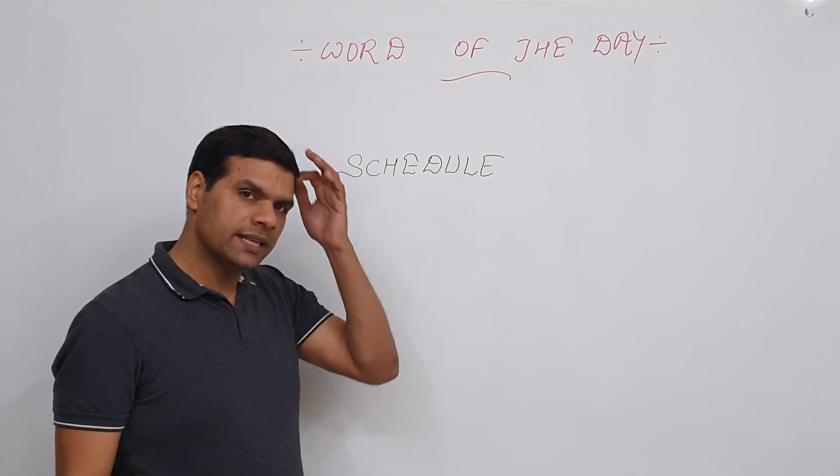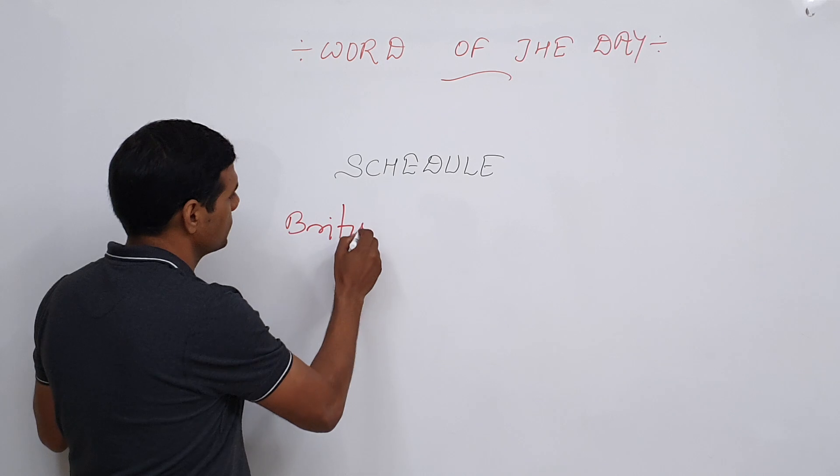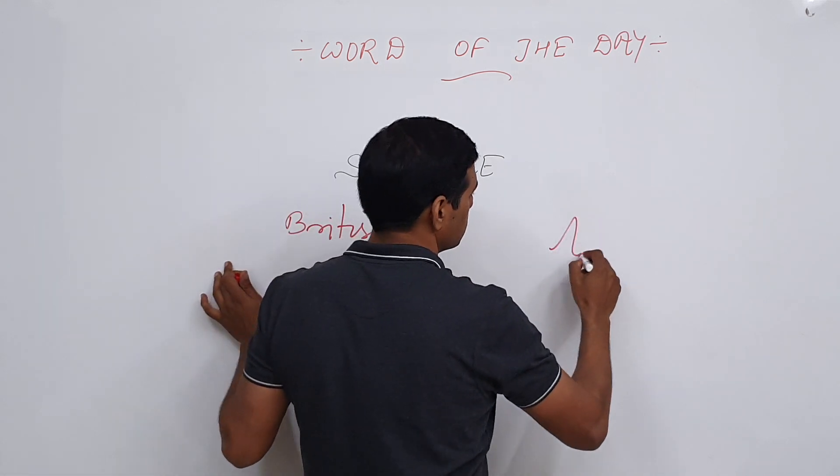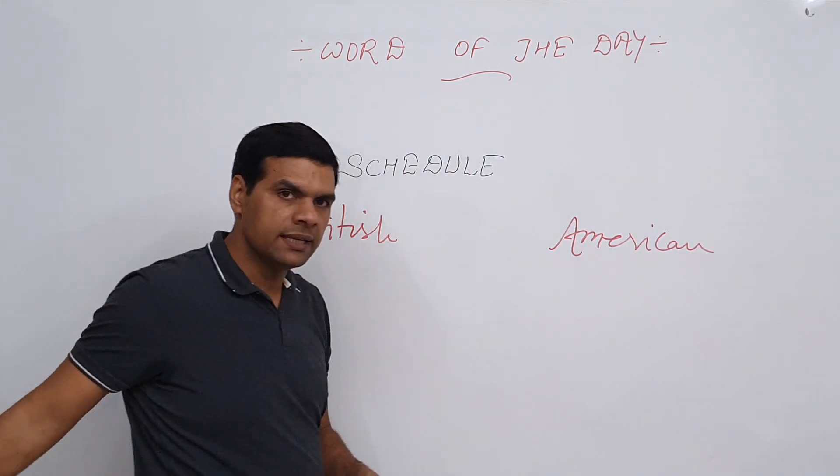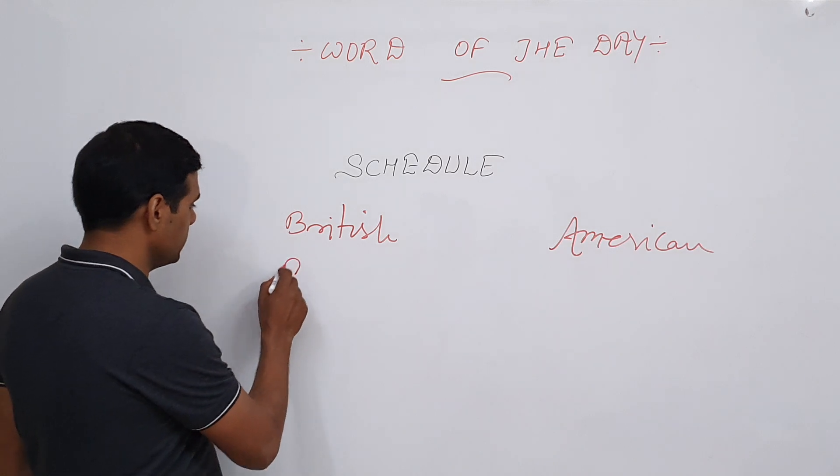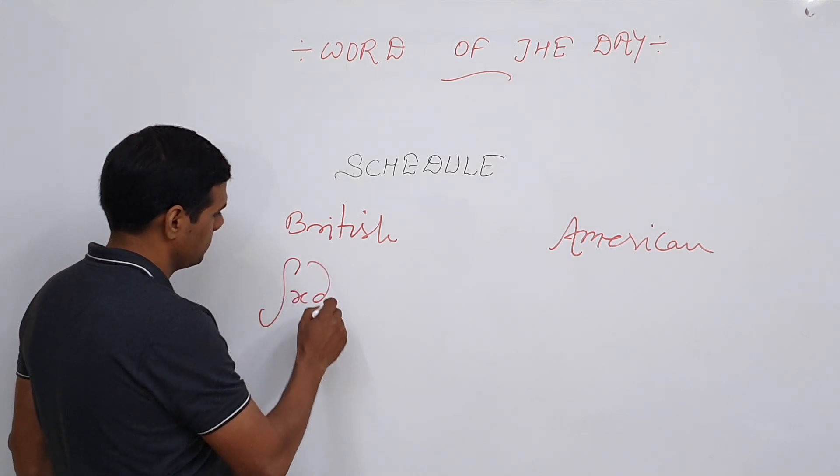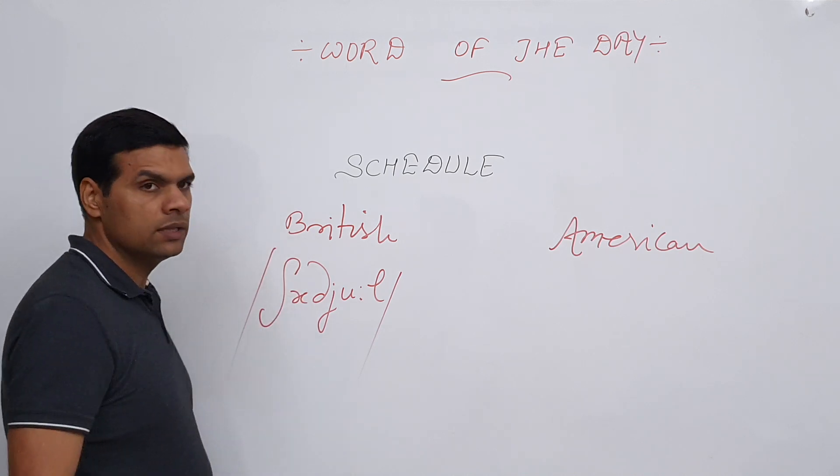Well, this word has got two pronunciations: one is British and the other one is American, as is the case with many other English words. What is the British way of saying this word? Well, the same is [writes on board]. This is what we call 'schedule.'